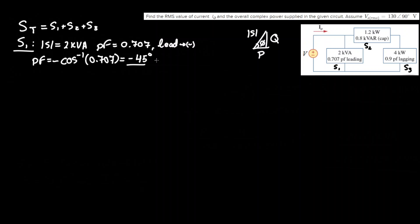So now we have all we need to make the full phasor, so it'd be S1, I'll put a little hat here to indicate that it's a phasor, equals 2 angle negative 45 degrees kilovolt amps, and that is our answer for load 1.